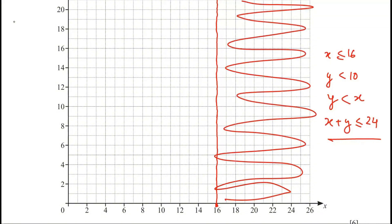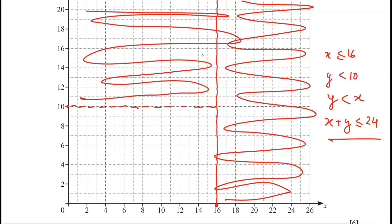The next one, y is less than 10. So let's go to y and here we have 10. This time we're going to draw a dashed line because 10 is not included. And then shade everything that we don't want. So here we have the unwanted region.